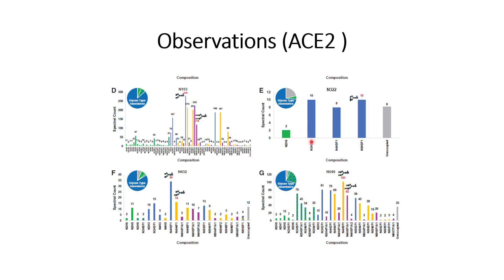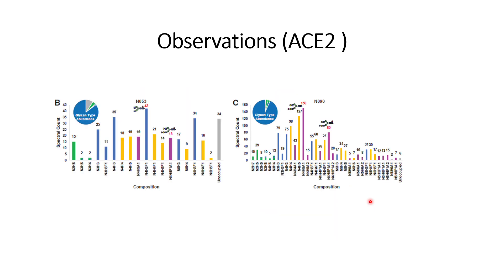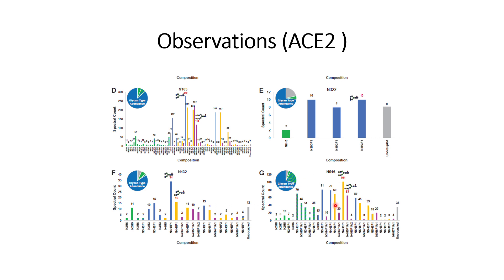For N-glycan site at N32, heterogeneity is slightly lower and the abundance is dominated by three main glycans. N-glycan site at N432 seems similar to N53 and N32. N546 appears to be a mixture resembling both N53 and N90. Looking across all sites, the blue color represents complex glycans, and all six glycan sites are dominated by complex glycans in terms of abundance.